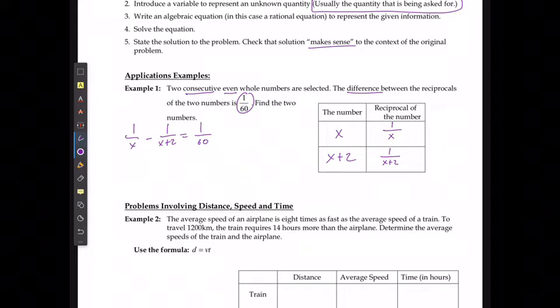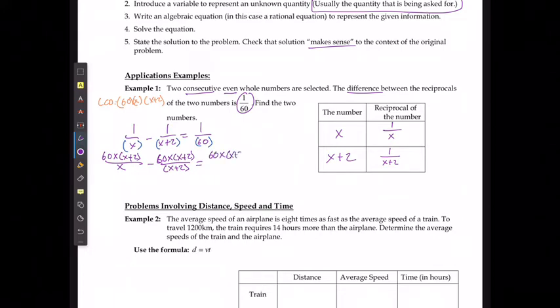I'm going to multiply all of them by the lowest common denominator. In this case, because all their denominators are different and they can't be factored, my lowest common denominator is going to be 60x and x plus 2. The nice thing is they're all over 1. So I can state that I have 60x and x plus 2 over x minus 60x and x plus 2 over x plus 2 equals 60x and x plus 2 over 60. Get rid of the x in the first case, the x plus 2 in the second case, and the 60 in the last one.